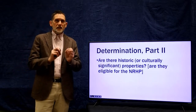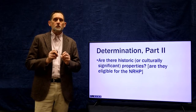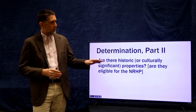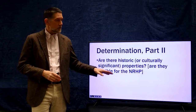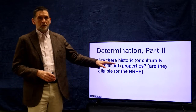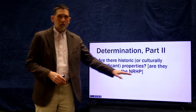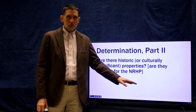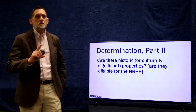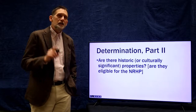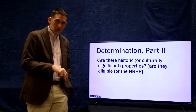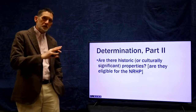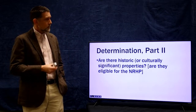Part 2 is the key piece under Section 106 for determining significance: are there historic or culturally significant properties? And that question is really, are there properties eligible for the National Register? Remember that this is about eligibility — not that they're listed already, but whether they are eligible to be listed, or potentially eligible to be listed.